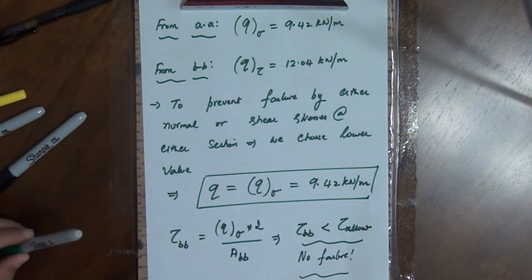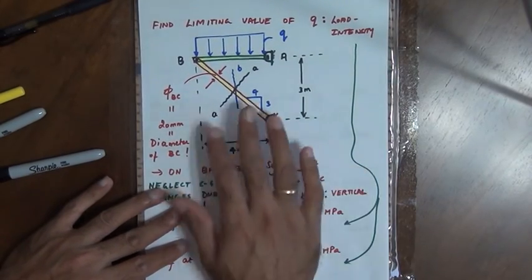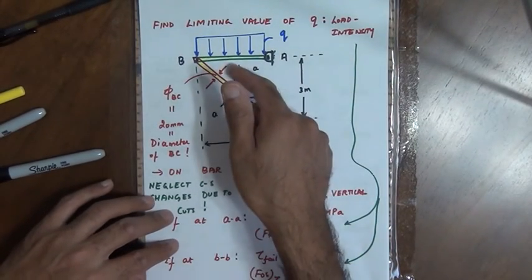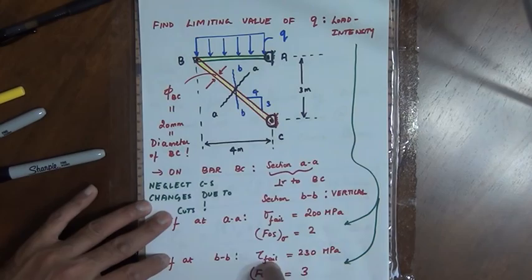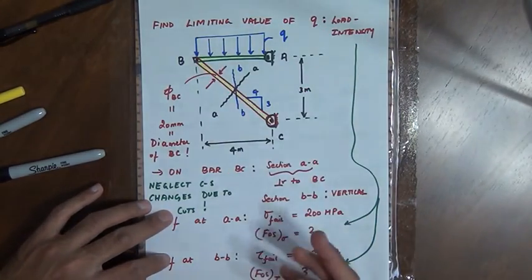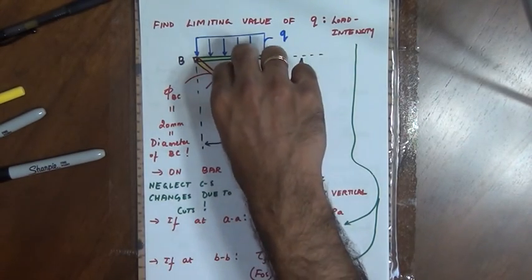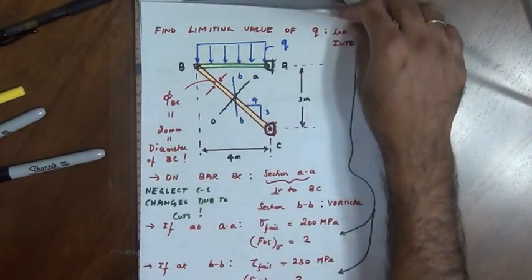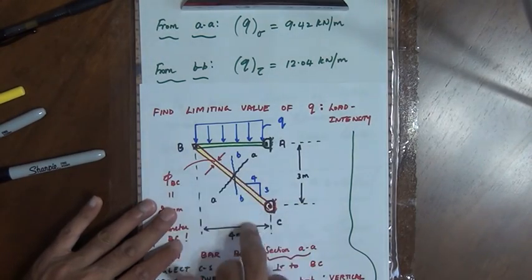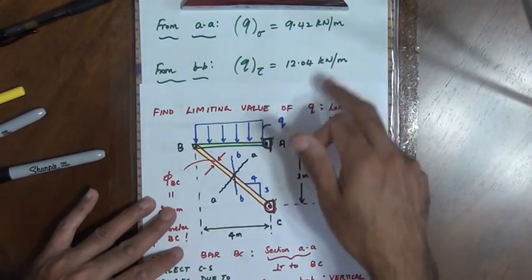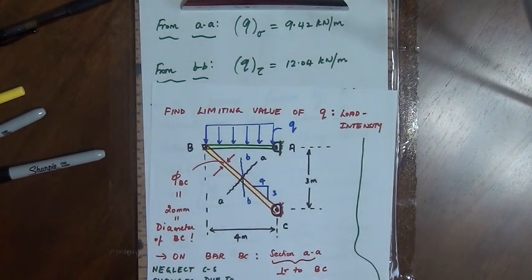In summary: we have a frame with a distributed load of unknown intensity Q. Given failure normal stress at section AA and failure shear stress at section BB, we found internal forces on each section in terms of Q, computed limiting values of Q from each criterion, and chose the smaller value to ensure the bar does not fail by either mode. The limiting load intensity is Q = 9.42 kN/m, controlled by the normal stress at section AA. Thank you.